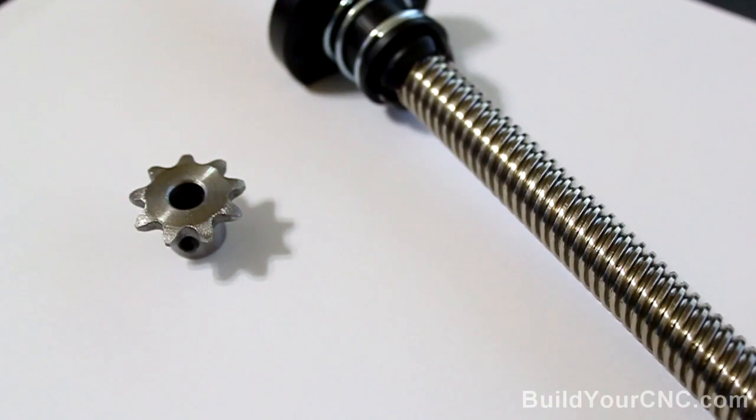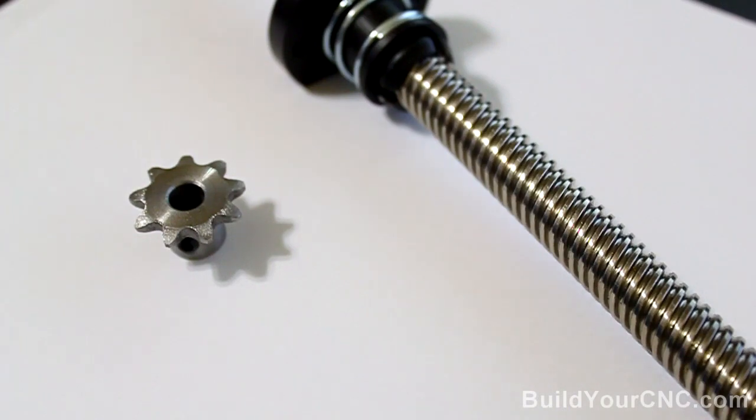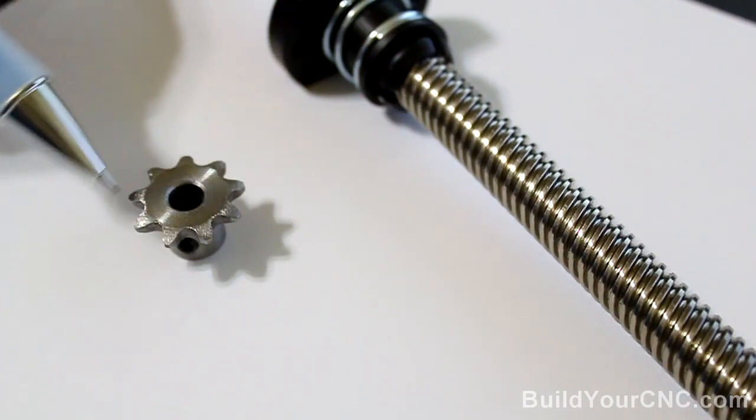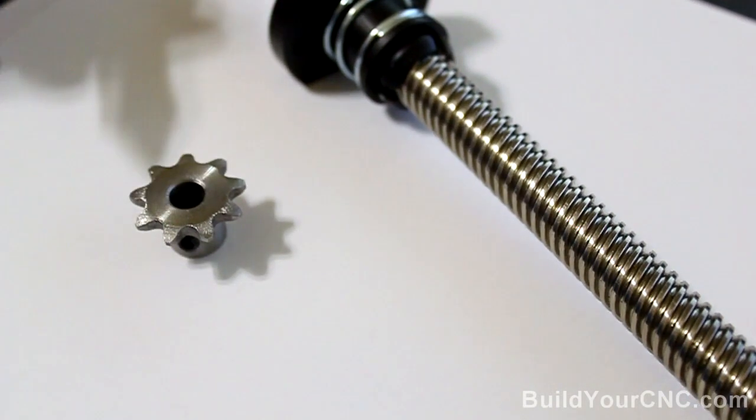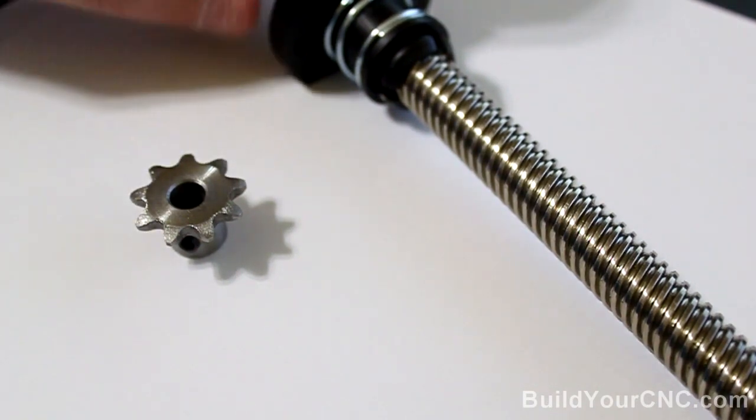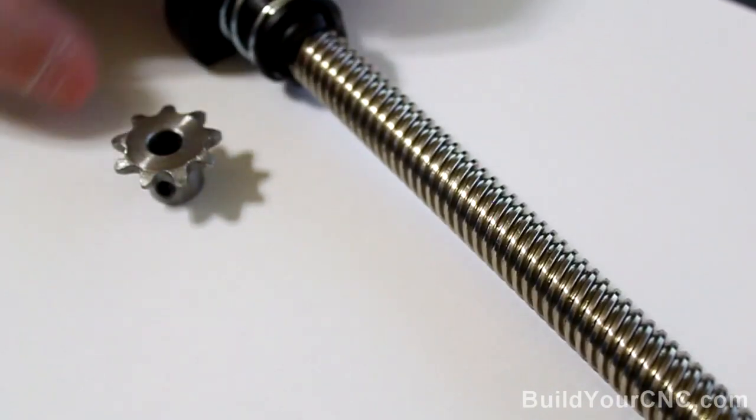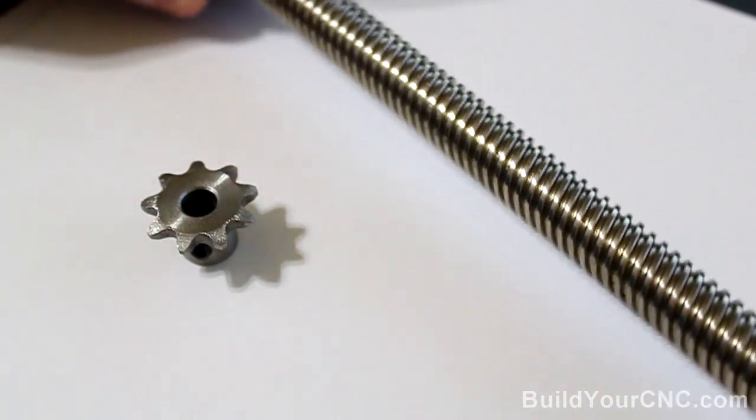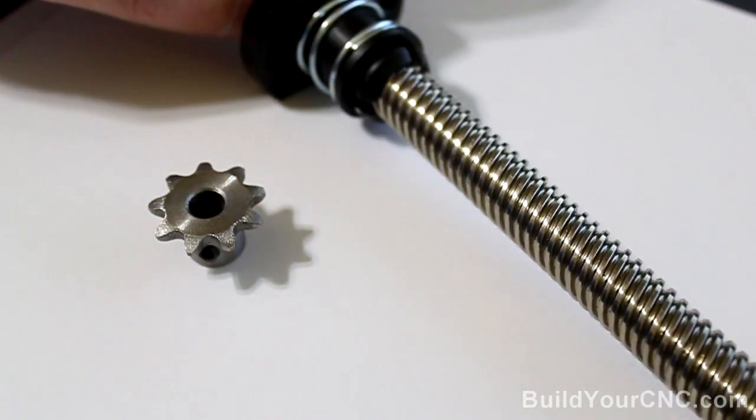So you're probably asking yourself, why would I even need to calibrate the machine after I figured out the steps per inch according to my mechanics? And the reason is, not all mechanics are perfect, even lead screws or roller chain especially, will have a stated error along its length.